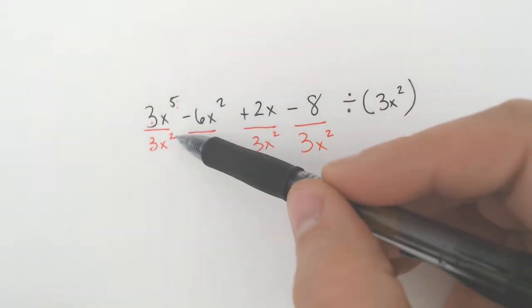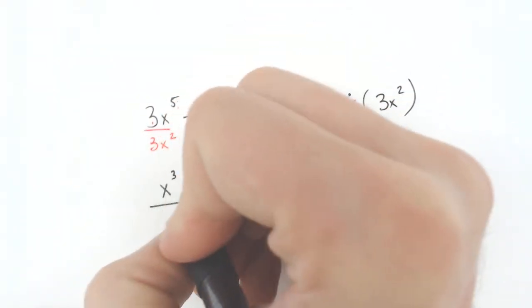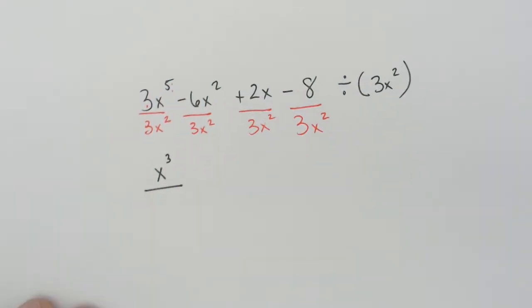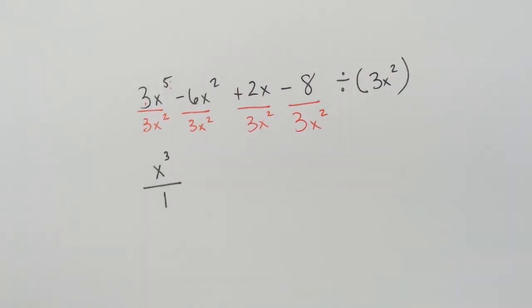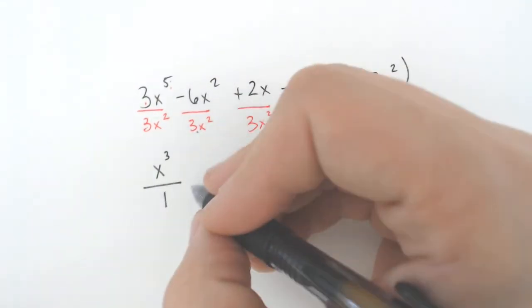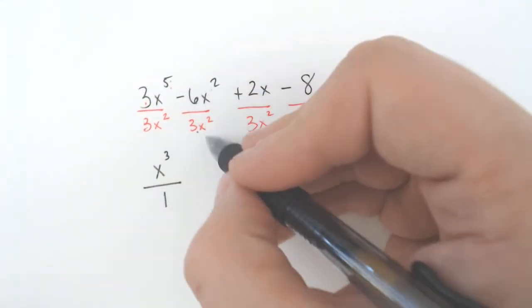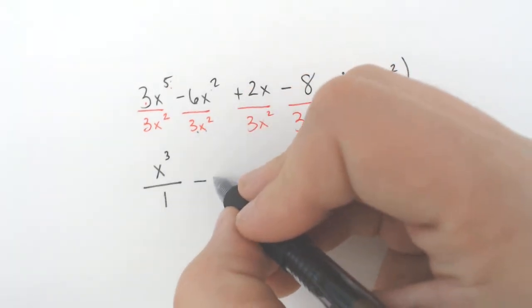The difference between 5 and 2 is 3, and the 5 was bigger. So it's going to be x to the third on the top and a 1 on the bottom. You don't need to write the 1. I'm going to write it twice so you can see the variances. 6 divided by 3 is 2. And x squared over x squared, those would cancel out. So it's just going to be minus 2.